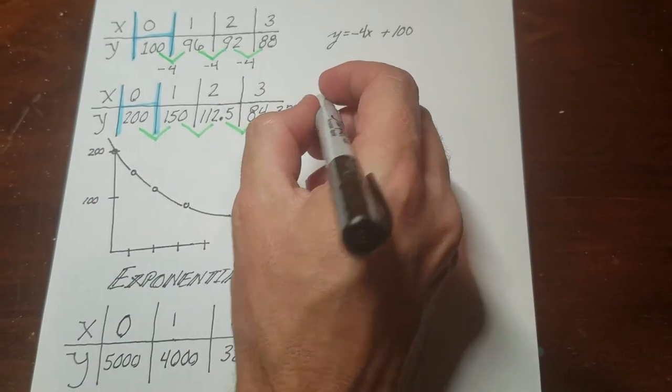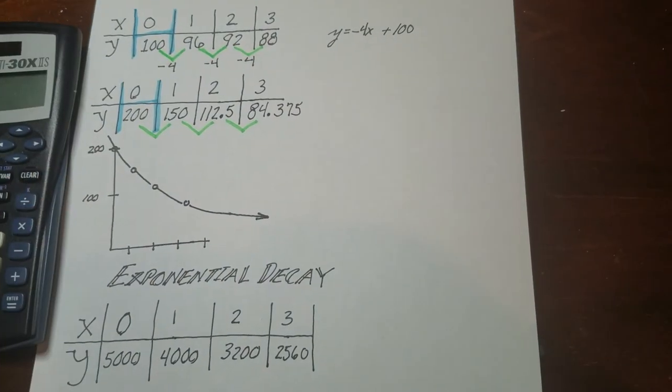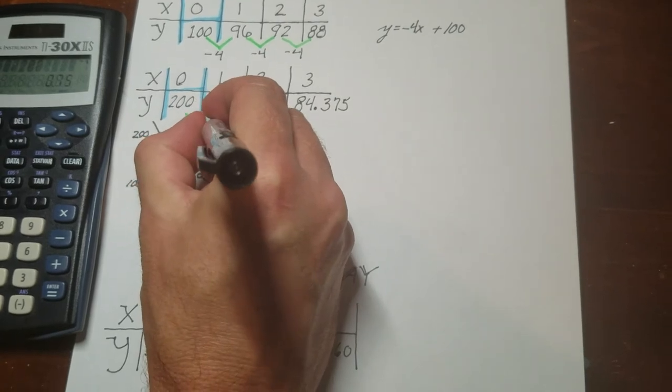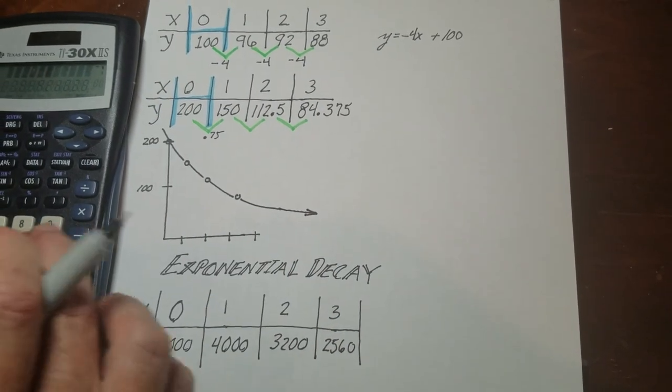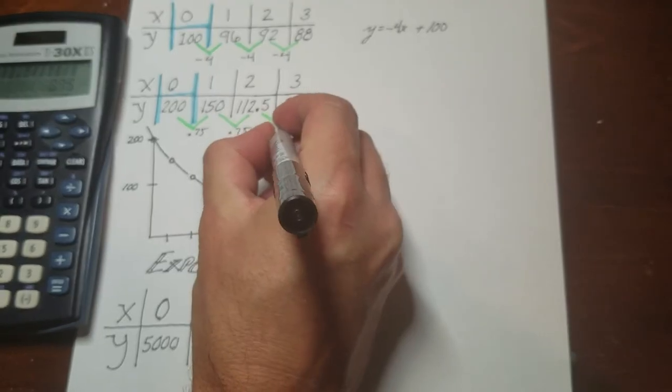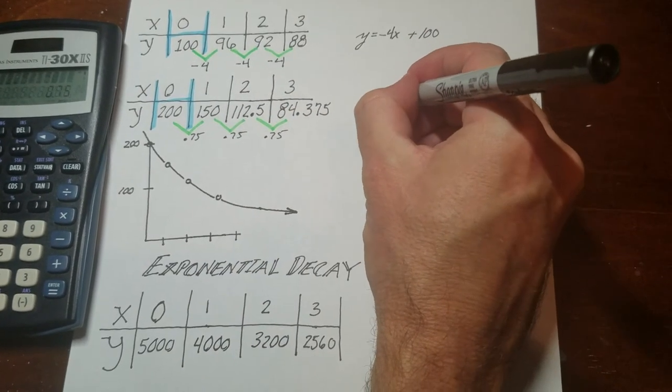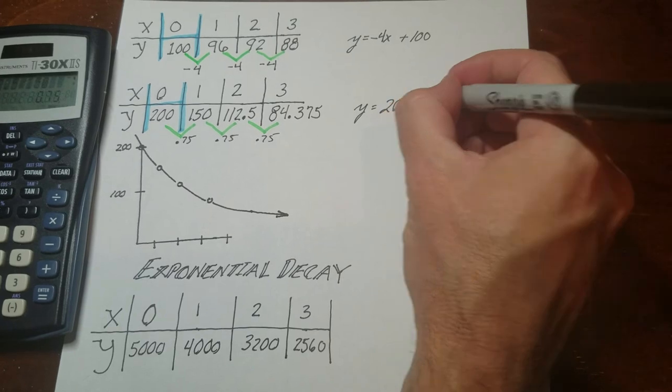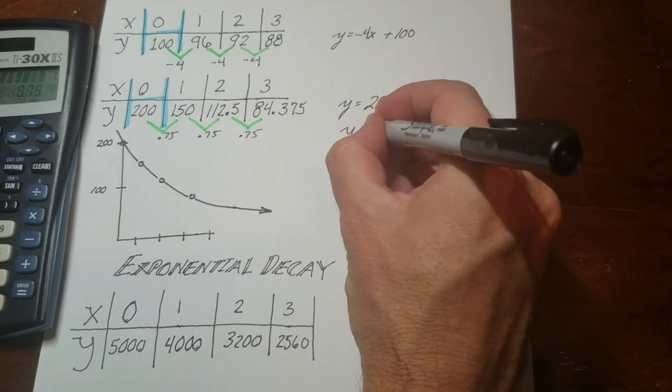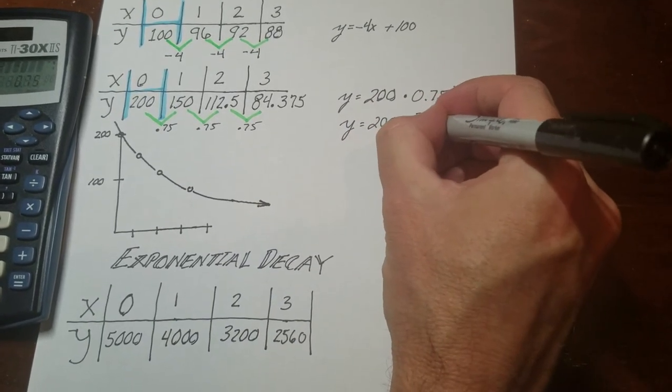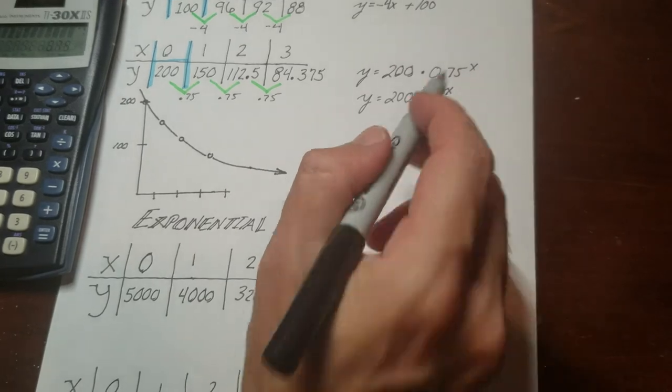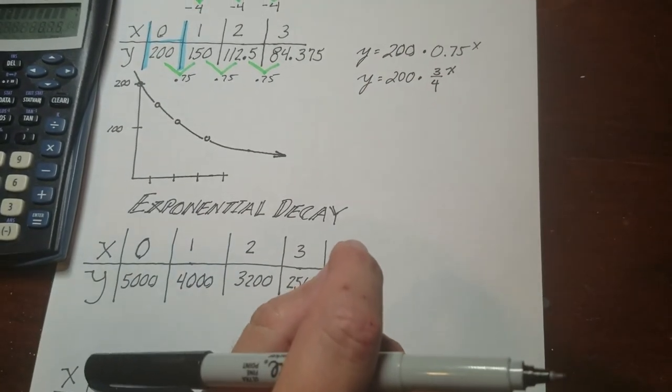So if I divide 150 by 200, I get 0.75. I've got this 112.5 divided by 150. Again, 0.75. Okay, so that's what I'm multiplying by. So that means that I started off here at 200. And then 75, I can write 0.75. You could write it actually this way if you want. But very often, they're actually going to use fractions. And in one of the videos coming up on exponentials, you'll see why that is. But this is the one that is usually preferred. So I have the 3 fourths to the x power.